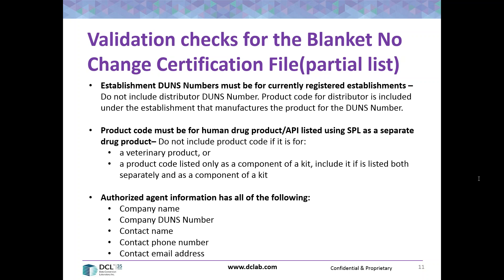The next question: Is DCL going to provide an updated workbook for clients to create this listing? Yes, we're going to provide a worksheet — a separate worksheet. We may end up putting it into the current workbook, but the current workbook already has a lot of tabs. To provide the blanket no change certification file, you'll fill out a spreadsheet for the authorized agent's information and for each establishment you'll list all their product codes. We're planning to have that in the early part of November.